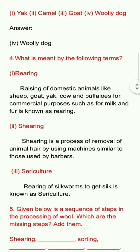Second term: shearing. Shearing is nothing but cutting the fur. Shearing is a process of removal of animal hair by using machines similar to those used by barbers — scissors, blades. That's what is done in the shearing process. Shearing means cutting.